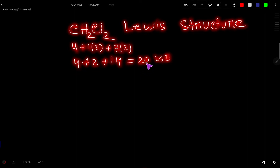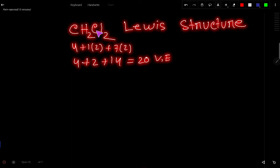These 20 valence electrons have 2 tasks or functions at the same time. The first function is to connect these 5 atoms together, and to satisfy the octet for carbon and chlorine, and to satisfy the duet for hydrogen. So let us do the first task.